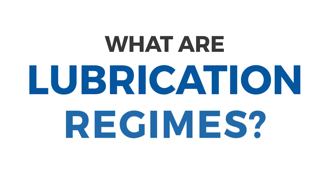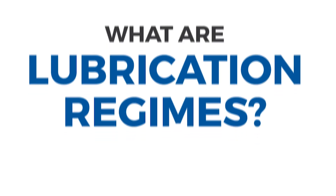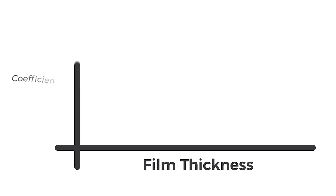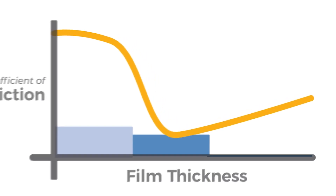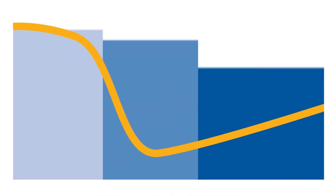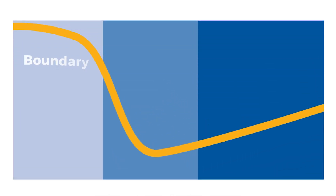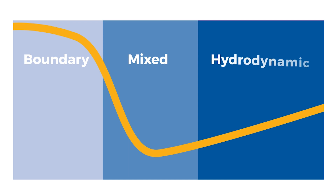What are lubrication regimes? Lubrication regimes describe the type of lubrication film that is created under specific operating conditions and is dependent on the degree of contact between surfaces. There are three primary lubrication regimes: boundary, mixed, and hydrodynamic lubrication.